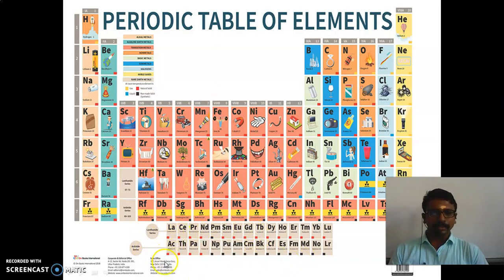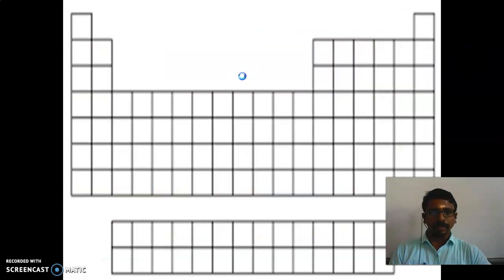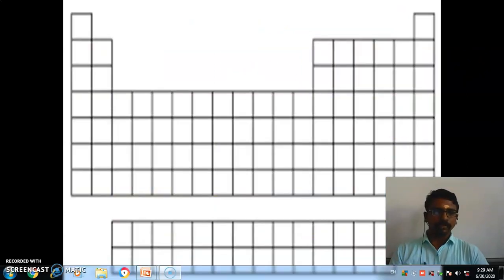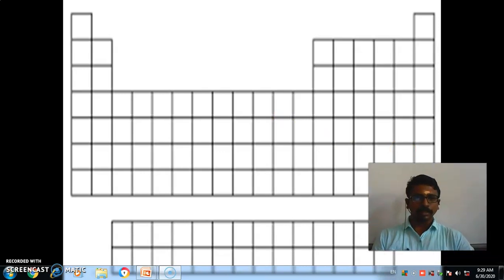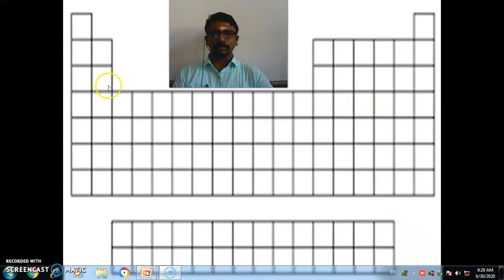So remaining elements can be easily write. It is very easy, easy only. First we have to write these elements. Next we can go for the remaining elements. How we can remember that remaining elements? Now we will take one empty periodic table. So in that we have to write the elements. Shall we start now?